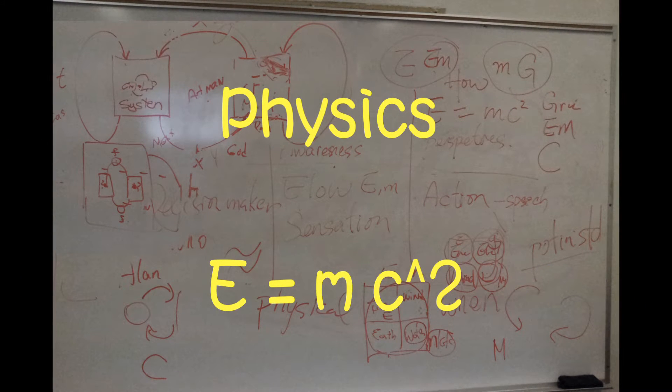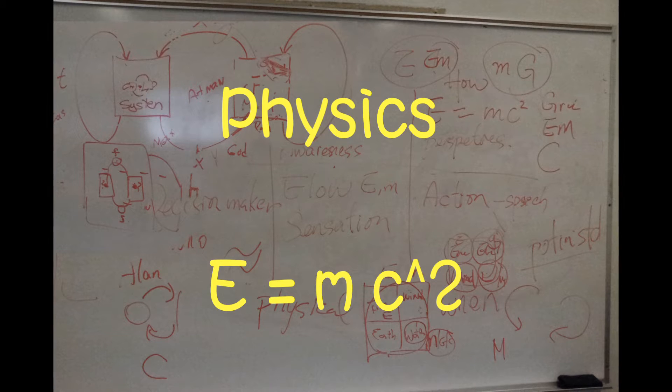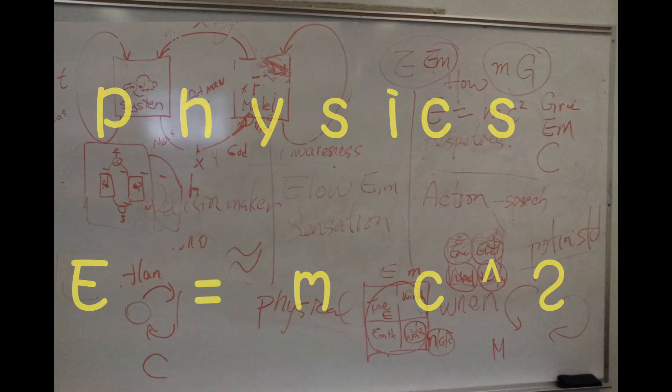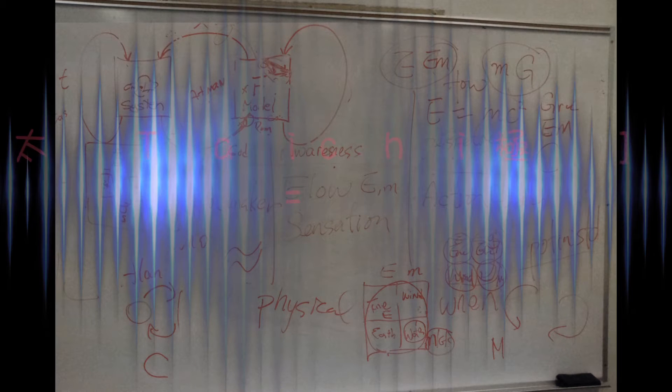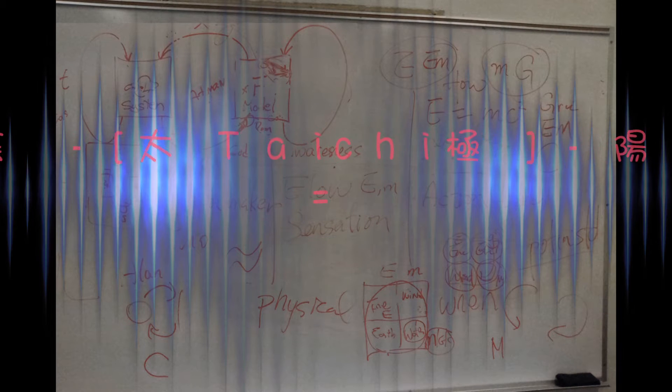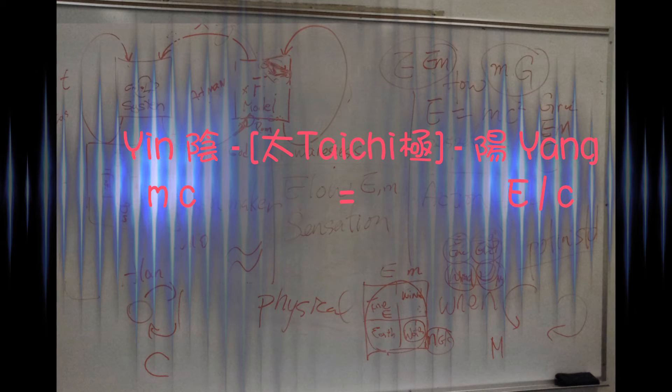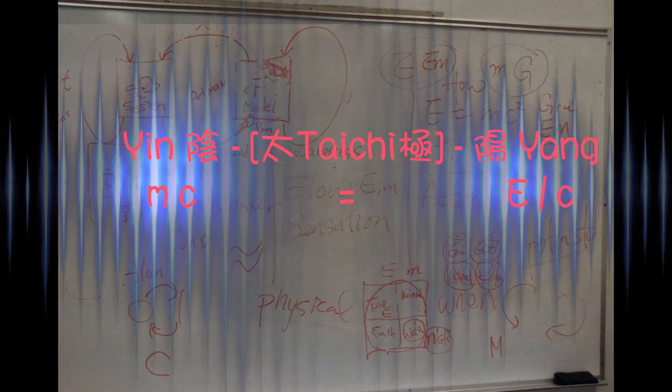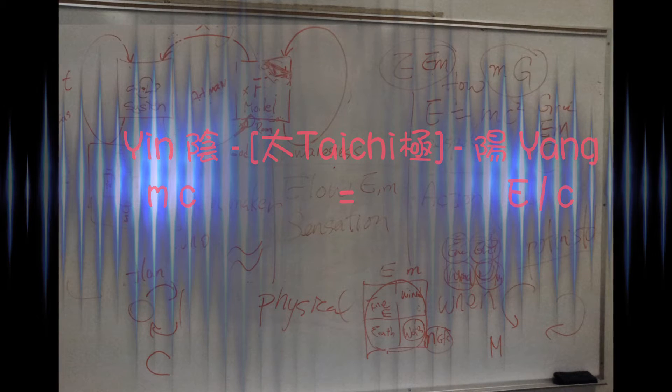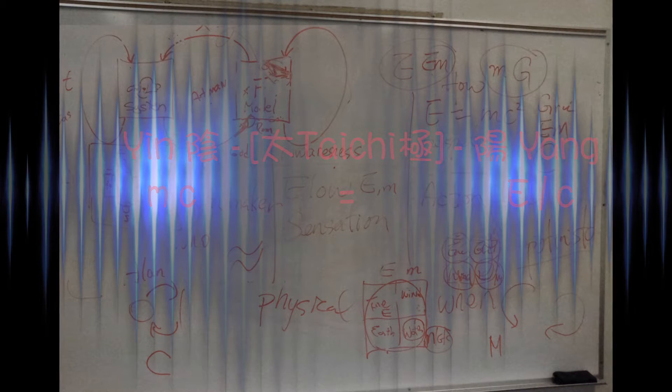In physics, the most famous formula E equals mc squared - can we rearrange that? This part is the yin, this part is the yang, and in between is the tai chi, the operator that's separating them. Here the operator is equal, but we could have greater than or smaller than.